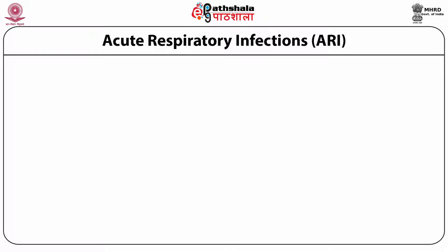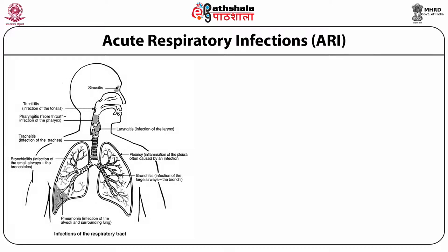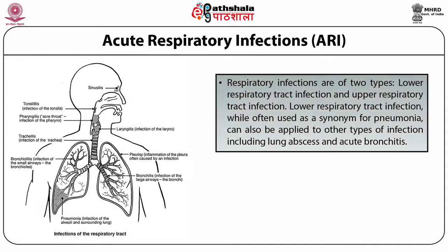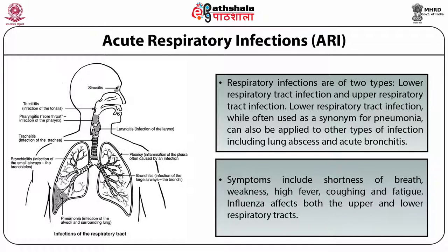Acute respiratory infections or ARI involve infections of the respiratory tract, which are of two types: lower respiratory tract infection and upper respiratory tract infection. Lower respiratory tract infection, while often used as a synonym for pneumonia, can also be applied to other types of infection including lung abscess and acute bronchitis. Symptoms include shortness of breath, weakness, high fever, coughing and fatigue. Influenza affects both the upper and lower respiratory tracts.